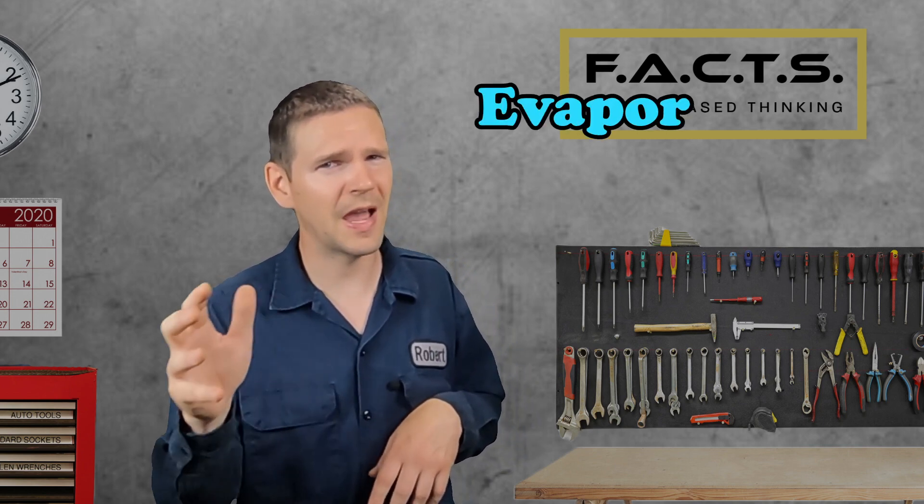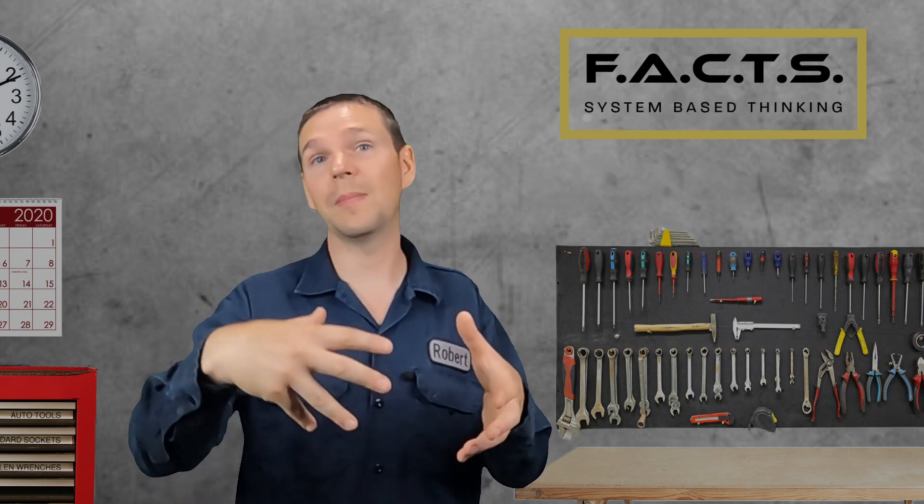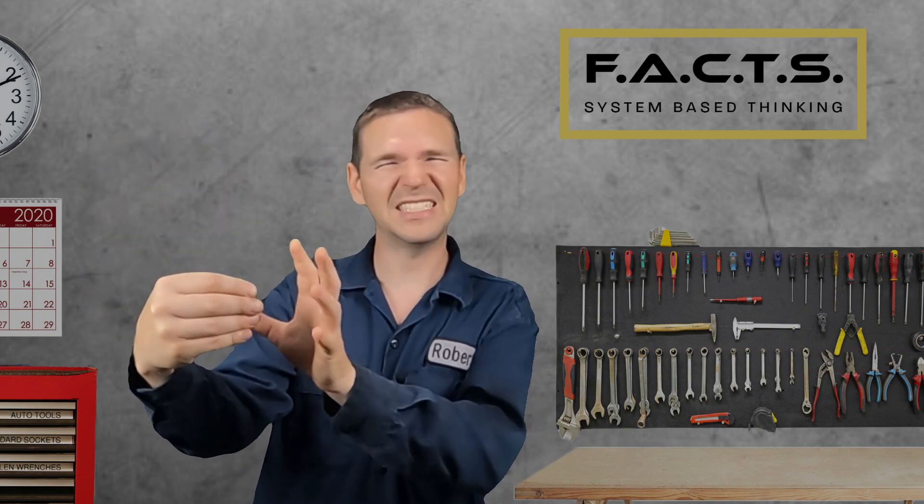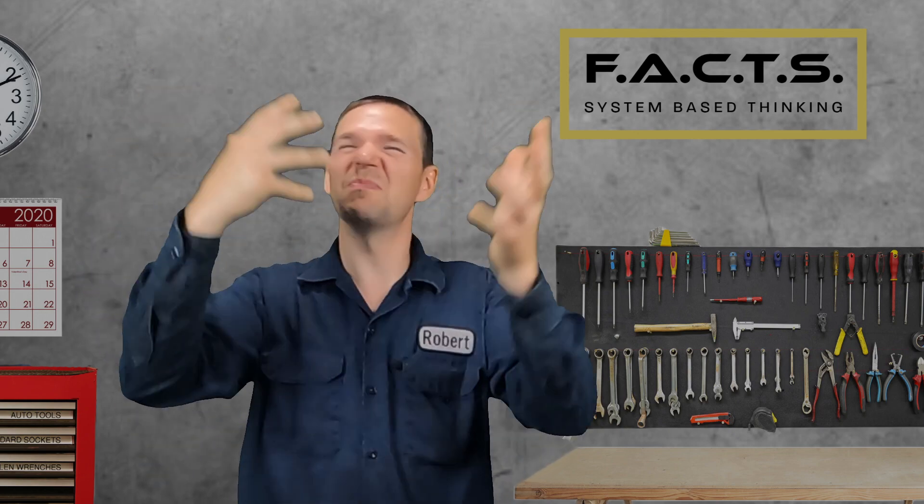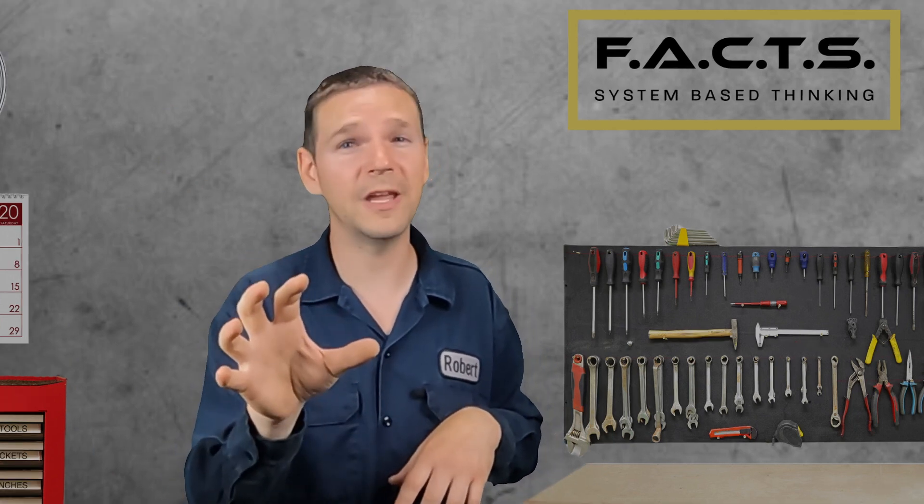So why is it called EVAP? Evaporative emissions. That's because the air that needs to come out of the tank to equalize pressure has hydrocarbons within it. Nasty little fuel vapors that mess with our atmosphere. We need to somehow control that vapor so it's not just spewed out into the air we breathe.